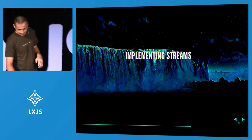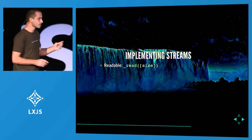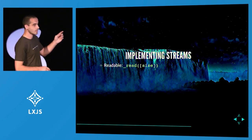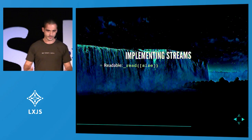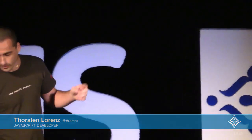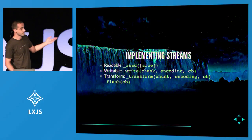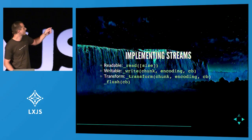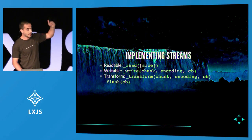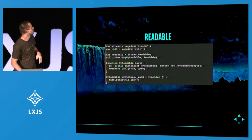Now about implementing streams. Node streams two and three give you base classes that help you implement these streams — they do a bunch of stuff under the hood, and you just basically inherit from them, then implement certain methods to make them work for your case. For the readable, you implement underscore read. For the writable, you implement underscore write. And for the transform, you implement underscore transform. And if you want to add extra data after the upstream ended, you do a flush.